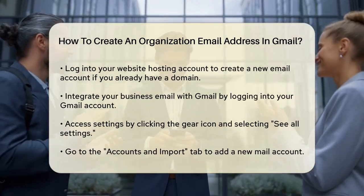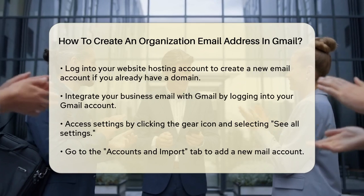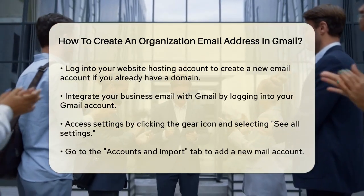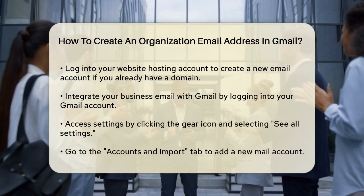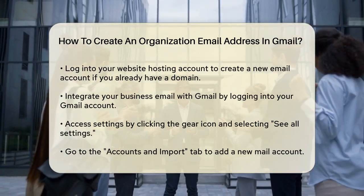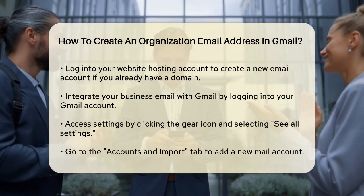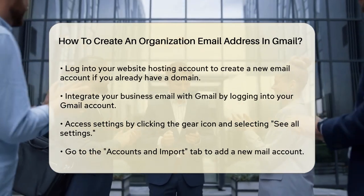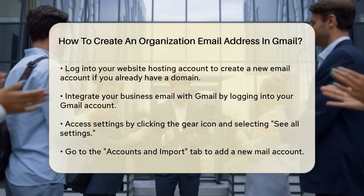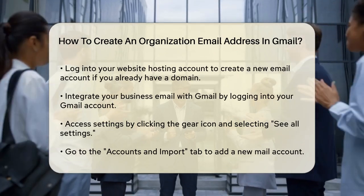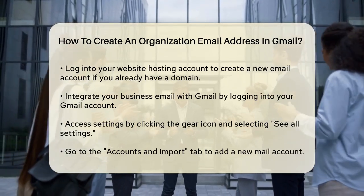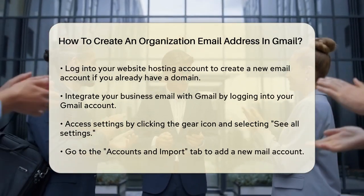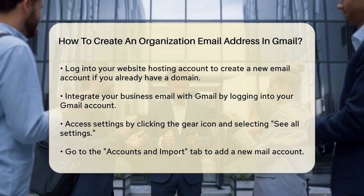Adding your business email to Gmail. Once you have your business email account set up, it's time to integrate it with Gmail. Log into your Gmail account and click on the gear icon in the top right corner. Select See All Settings and then go to the Accounts & Import tab. Here, find the Check Mail from Other Accounts row and click the Add a Mail Account link. Enter the email address you want to add and click Next. Select the option to import emails from my other account, POP3, and click Next again.